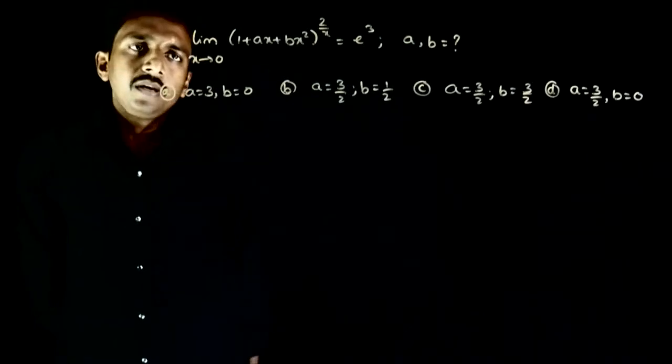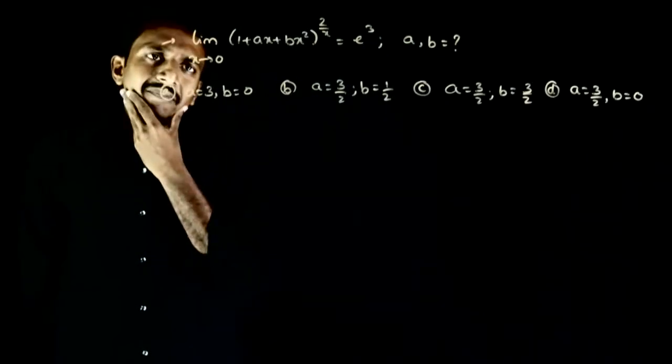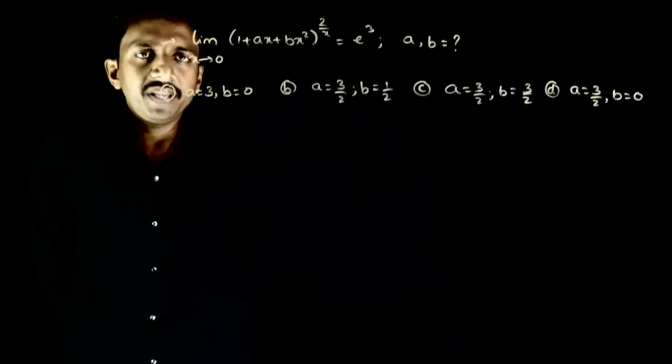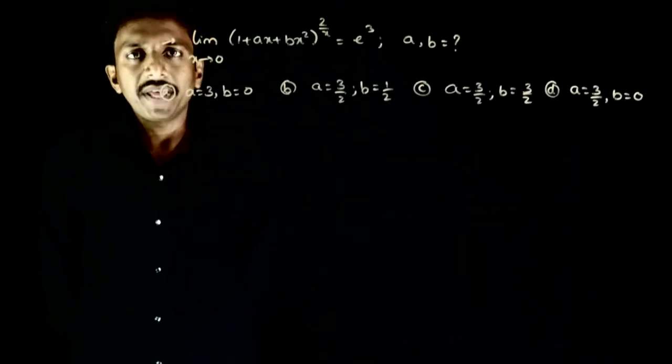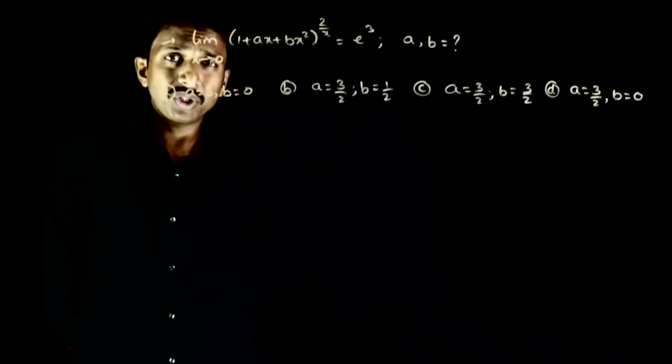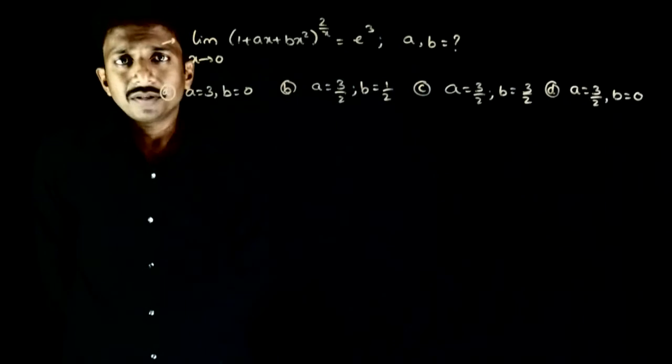So welcome students. This question mein aapko diya hai limit x tends to 0, 1 plus ax plus bx square power 2 by x is equal to e³. If that is so you are asked to find the values of a and b.